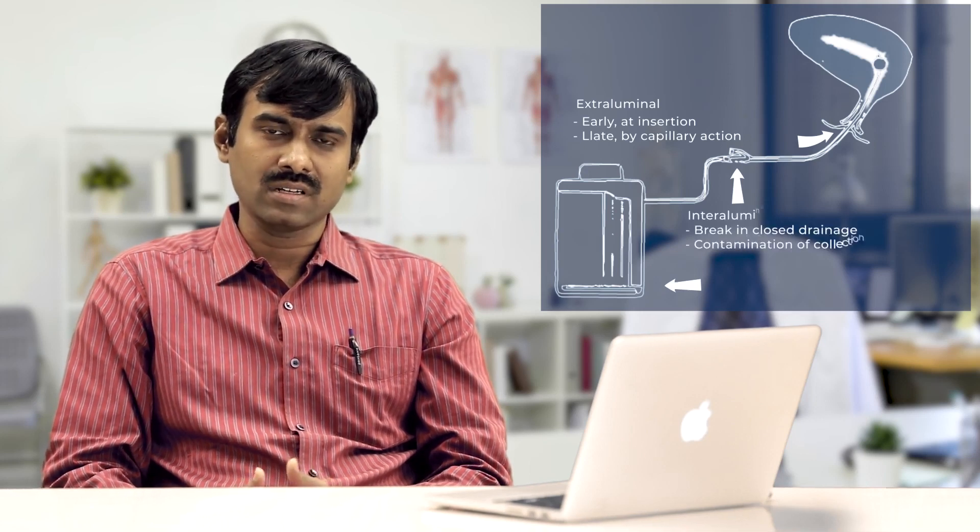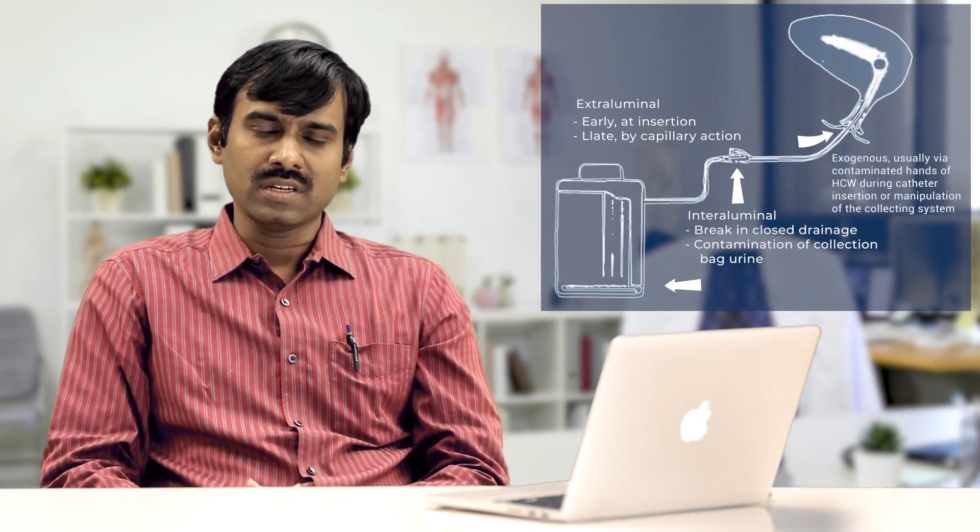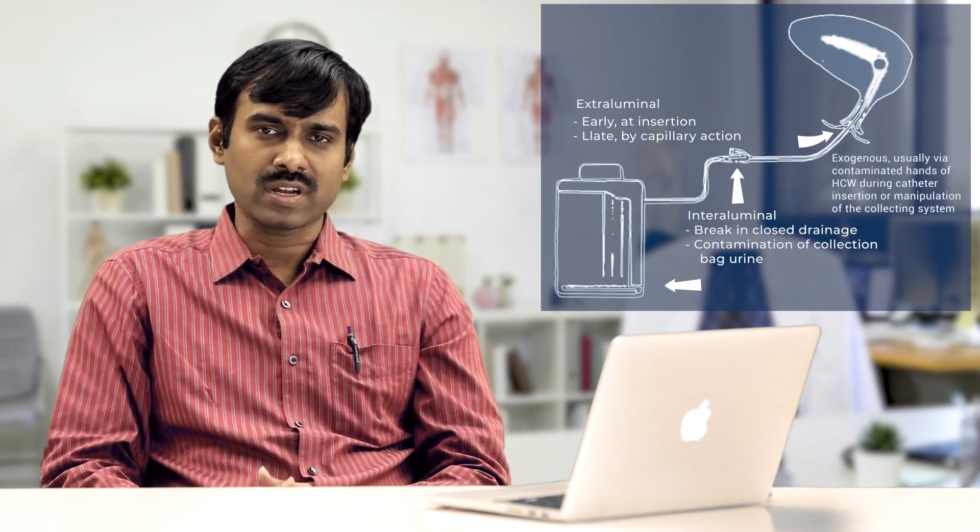How does CAUTI occur? CAUTI occurs by entry of organisms into the urinary tract through the catheter. This can happen either extraluminally — around the catheter — or intraluminally — through the lumen of the catheter. Extraluminal infections are quite common, accounting for two-thirds of infections. They are mainly due to endogenous organisms present in the perineal regions including the rectum, vagina and pelvis, occurring during catheter insertion or later due to capillary action. Intraluminal infections are due to exogenous organisms and occur due to contamination of catheters from healthcare workers.